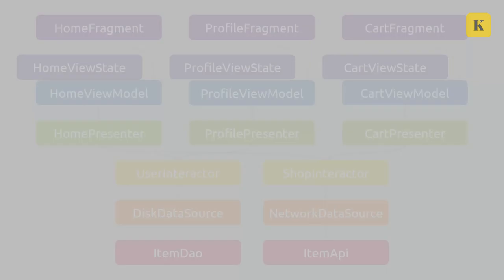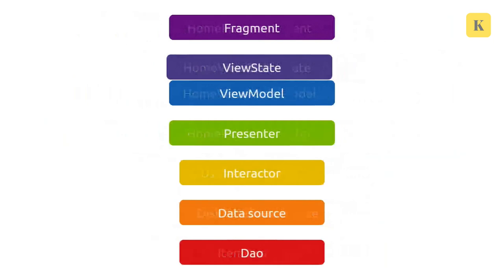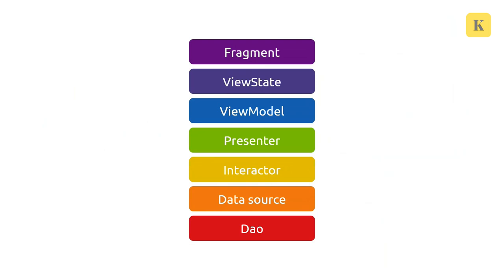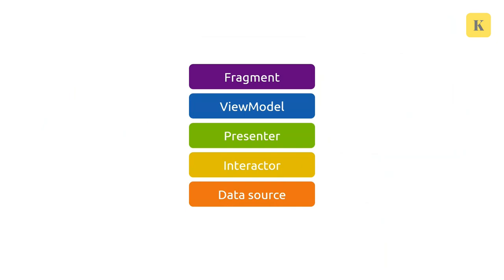Whenever I introduce Rainbow Cake to people, I used to show them a very scary chart which is a representation of classes in an application built on Rainbow Cake. We're going to simplify this into the layers it has. Two of these are just implementation details of some other layers, so we'll get rid of those. That gets us to the five actual layers inside a Rainbow Cake app. Rainbow Cake covers the architecture of an app top to bottom — all the way from the UI layer to the data sources.